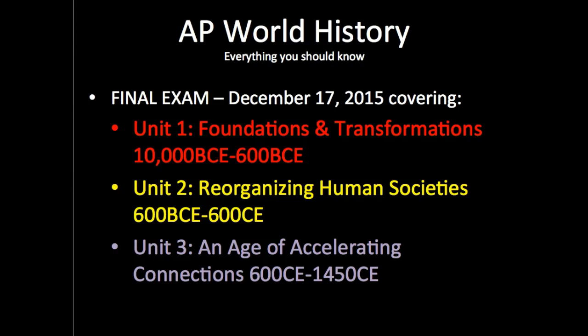Unit 1 goes back to the first couple weeks of school — that's the Foundations and Transformations unit, stretching from about 10,000 BCE to about 600 BCE. Unit 2 is Reorganizing Human Societies, from about 600 BCE to 600 CE, also known as the Classical Era. Unit 3 is the unit we're just finishing up, the Age of Accelerating Connections, from 600 CE to 1450 CE, also known as the Post-Classical. This first review will be a brief review over the Foundations and Transformations unit — check back for a review over Unit 2 and 3 as well.